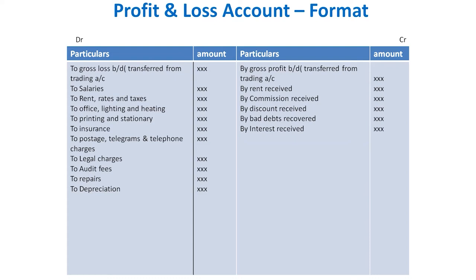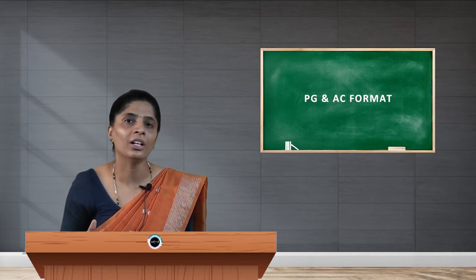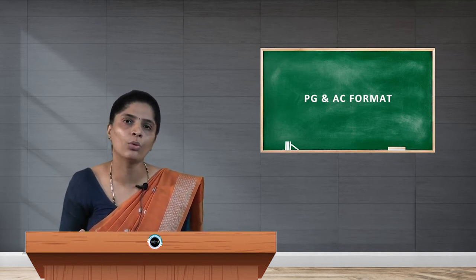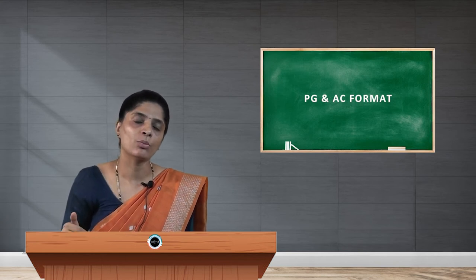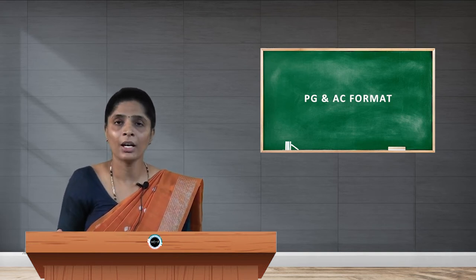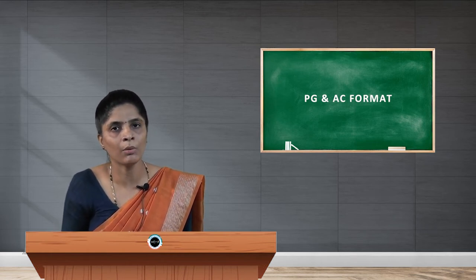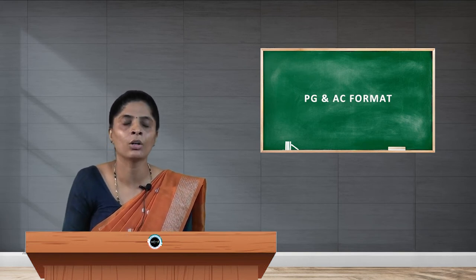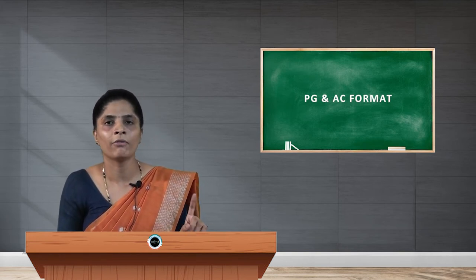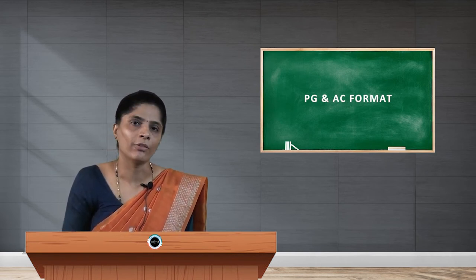The very first step in the profit and loss account is to enter the result of the trading account. If the result is gross profit, it is taken on the debit side in the trading account, but when brought down to the profit and loss account it is entered on the credit side. If the result is gross loss, it is entered on the debit side of the profit and loss account.